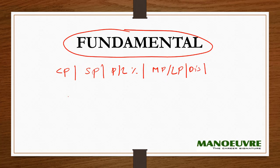For example, you bought a product for Rs. 100 — this is your cost price — and you marked it up by 20 rupees. So 120 will be your mark price. Now you give a discount of 10 rupees. After giving the discount, the value that comes is the selling price, which is 110.